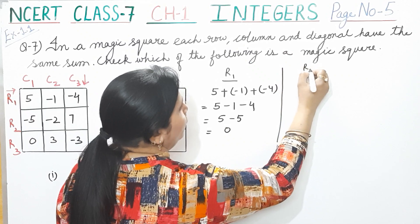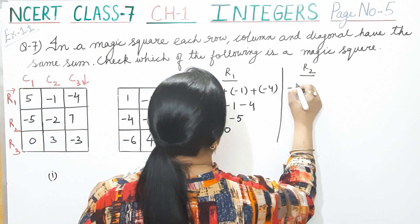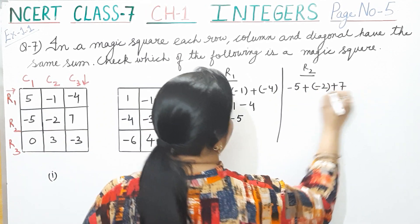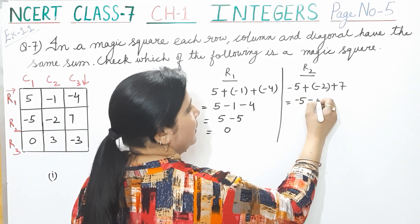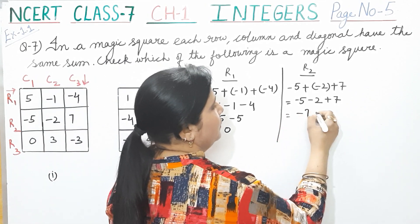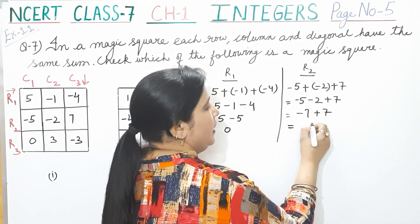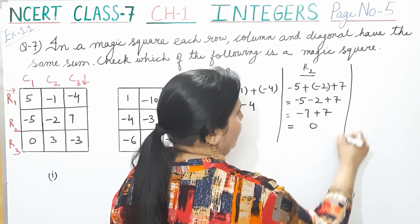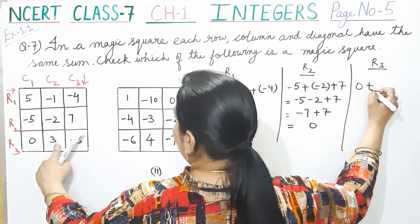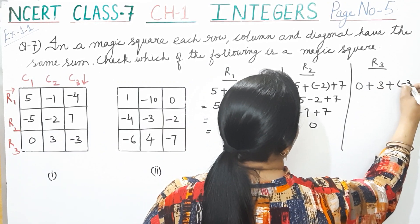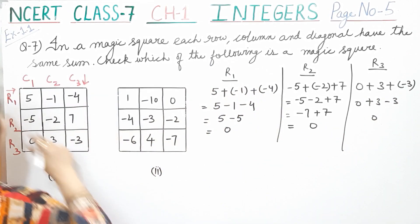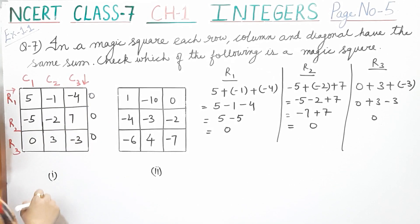Now row 2: -5 + (-2) + 7. So -5 - 2 is -7, and -7 + 7 = 0. Now row 3: 0 + 3 + (-3) = 0 + 3 - 3 = 0. So row 1 is 0, row 2 is 0, and row 3 is also 0.